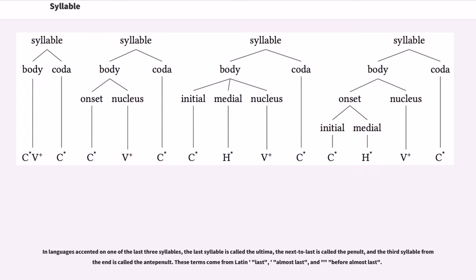In languages accented on one of the last three syllables, the last syllable is called the ultima, the next to last is called the penult, and the third syllable from the end is called the antepenult. These terms come from Latin: last, almost last, and before almost last.